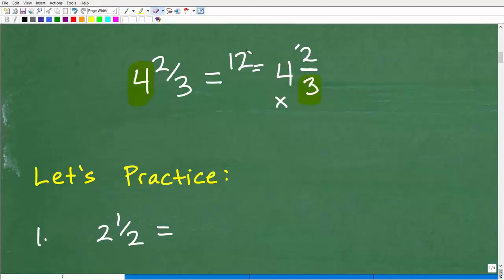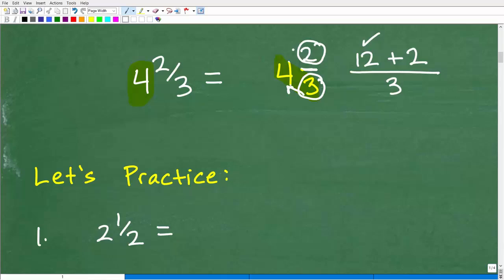Then we're going to add this top number. I think it's just easier for me to just show you. So 3 times 4 is 12, and then we add this number 2. That is our numerator, and then we just keep this as our denominator. So 3 times 4 is 12 plus this little number right here, 2, is going to be 14 over 3.